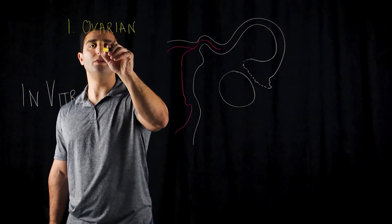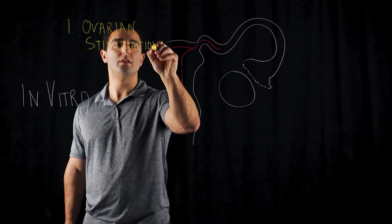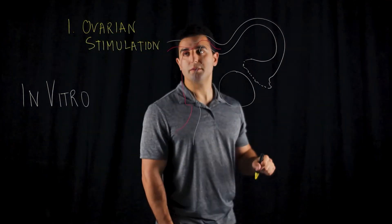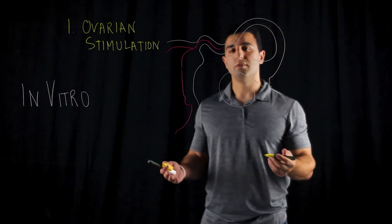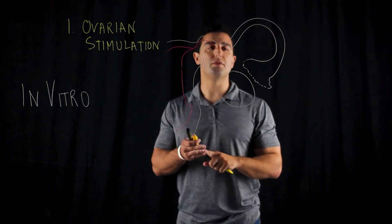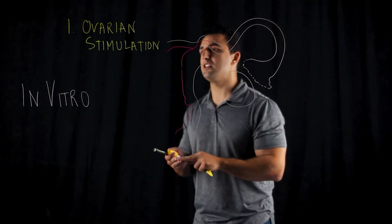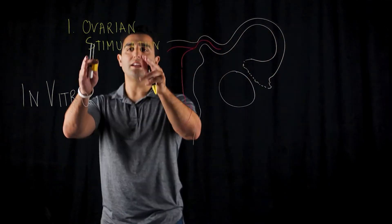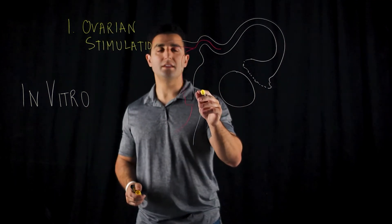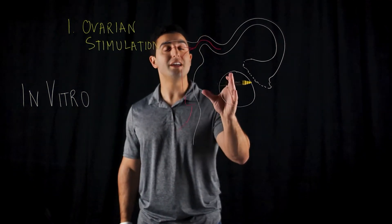What hormones trigger ovulation? The hormones involved are estrogen, follicle-stimulating hormone (FSH) from the anterior pituitary, and luteinizing hormone (LH) from the anterior pituitary. Synthetic versions of these hormones are used to actually force the egg to be released outwards from the follicle.